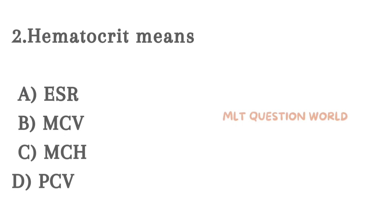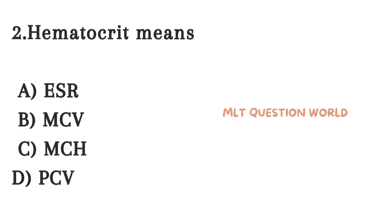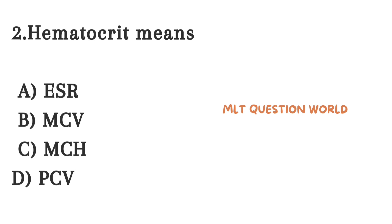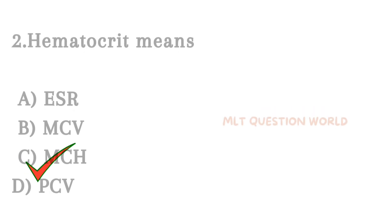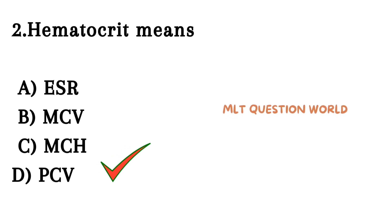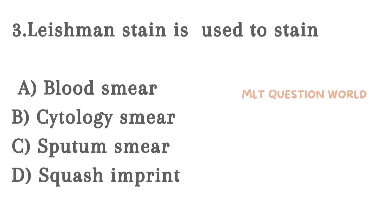Next question. Hematocrit means: Option A. ESR, Option B. MCV, Option C. MCH, Option D. PCV. The right answer is Option D — PCV. Hematocrit means packed cell volume or PCV.